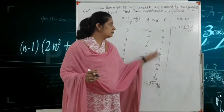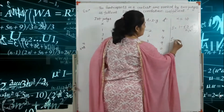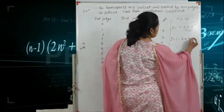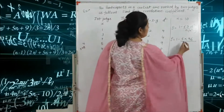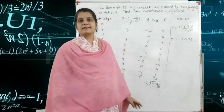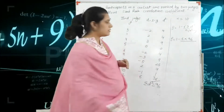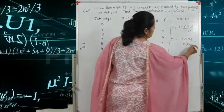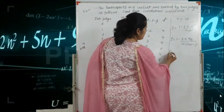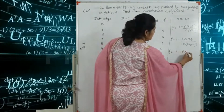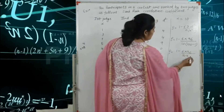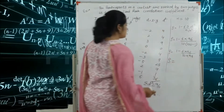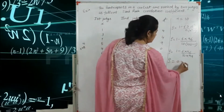We put this value into the formula: rho = 1 minus 6 times 96 divided by n(n² minus 1), where n = 10. So that is 10 times (100 minus 1) = 10 times 99. Solving this gives rho = 1 minus 576/990, and we get rho = 0.418. This is your rank correlation coefficient.